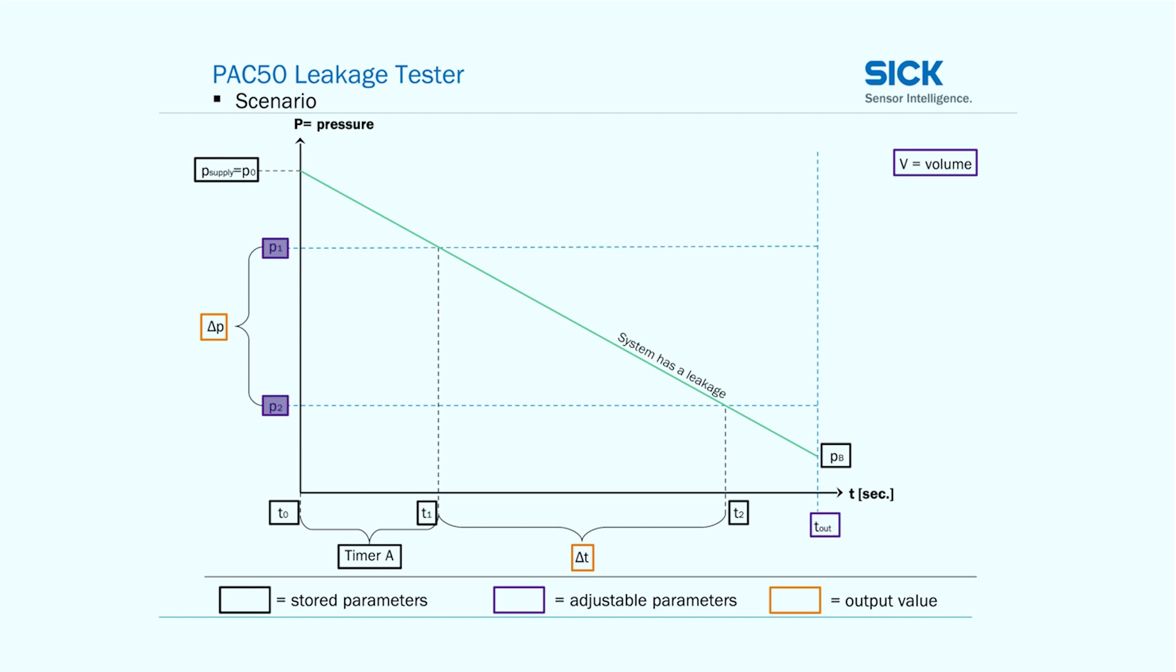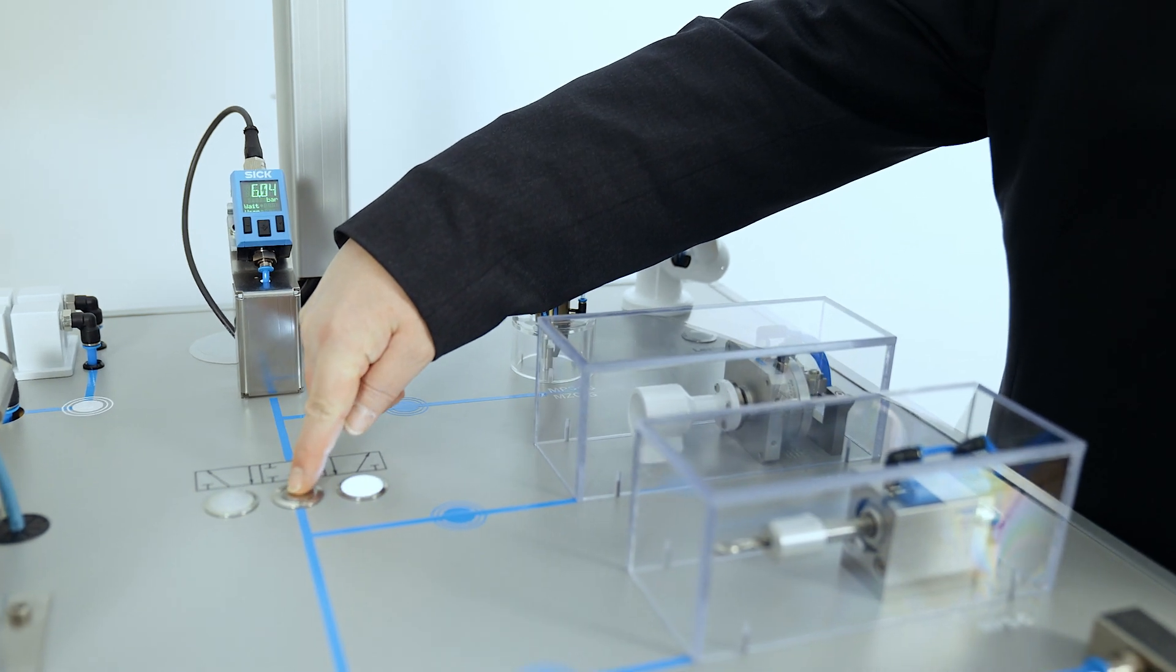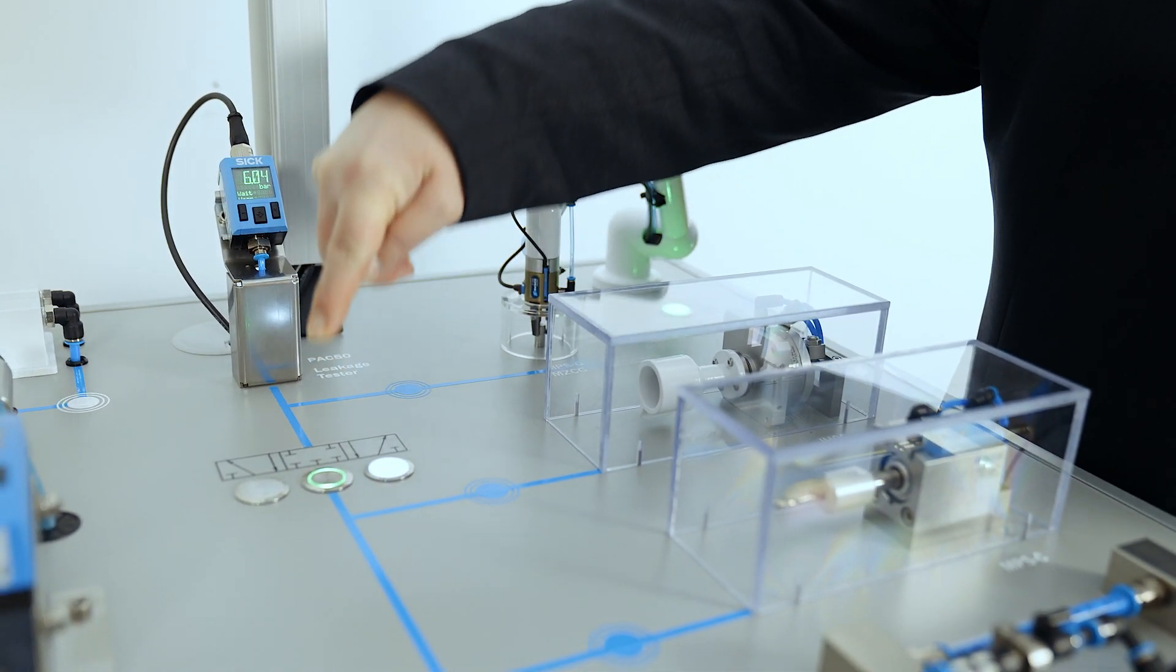Likewise, two threshold values for the pressure range to be checked were already set in advance into the sensor. The command of a PLC to start a measurement can be simulated on the exhibit by pressing the center button in front of the PAC50 leakage tester.